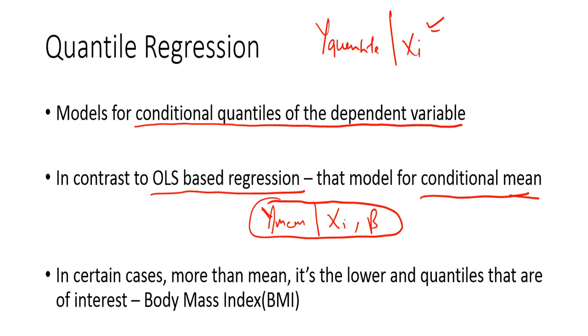Whereas when you take the average, you just have one average. But quantiles could be many.